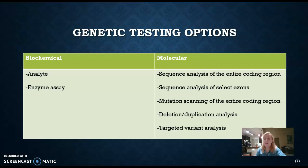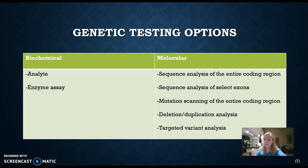The genetic testing options available to confirm this diagnosis fall into two categories: biochemical and molecular. Biochemical testing deals with the enzymes that are specifically produced. Molecular genetic testing deals with the specific codons and sequences of the gene in question, aimed at finding the specific mutation in both genes. This can be quite expensive — some tests run upwards of $800 to $1,000 per test, and sometimes multiple tests are needed.